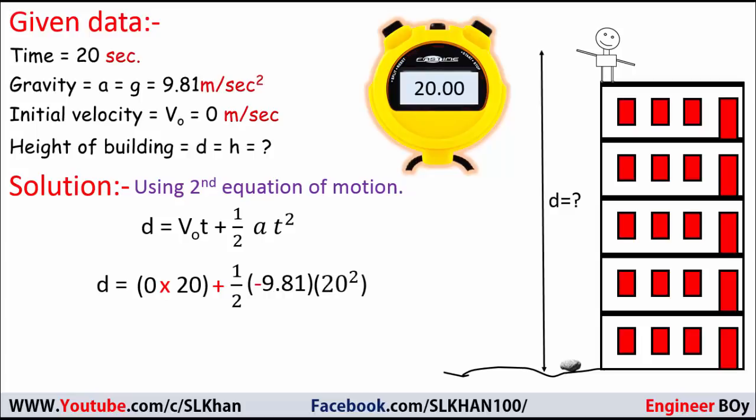And then t squared which is 20 squared. So by doing the math we get the building's height equals minus 1962 meters. If you notice the value is negative because it's displacement. So what should be the distance or height? It is the same value but positive because distance cannot be negative.